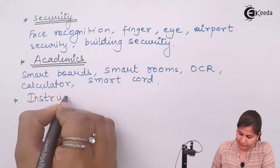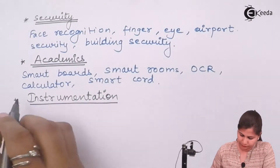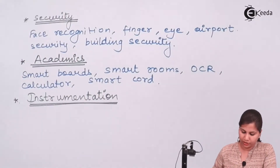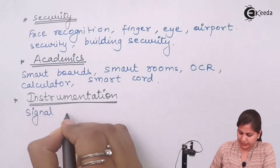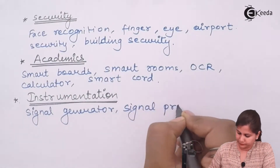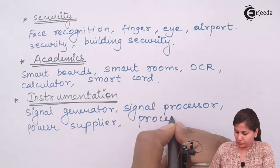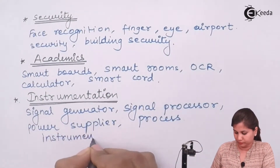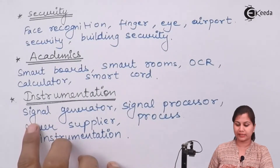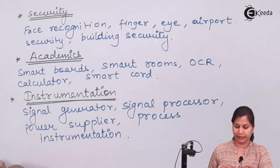In the field of instrumentation, embedded systems are used. Examples include the signal generator, signal processor, power supplier, and process instrumentation. In the instrumentation field, these are various examples of embedded systems.